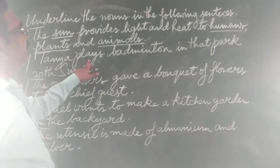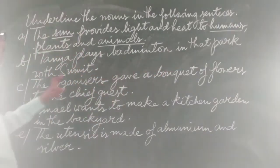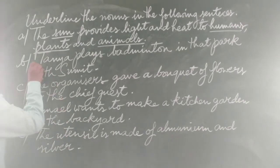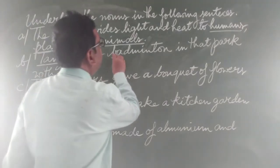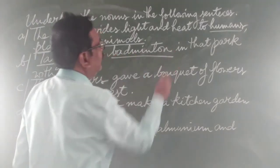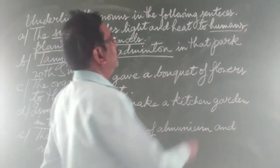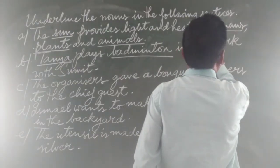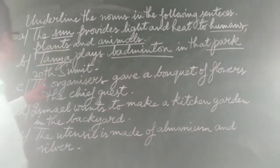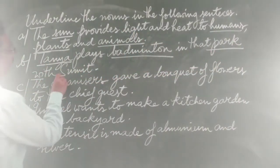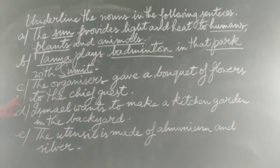Look at sentence D: 'Tanya plays badminton in that park with Veson.' Here, Tanya is a proper noun. Veson is also a particular name, so it is also a proper noun. Park is a place — also a noun. And Sumit is a proper noun as well.